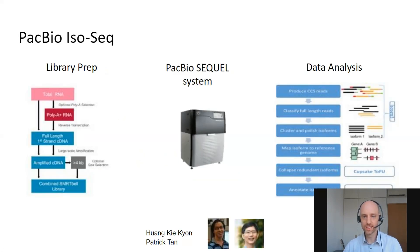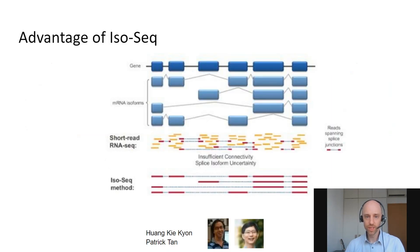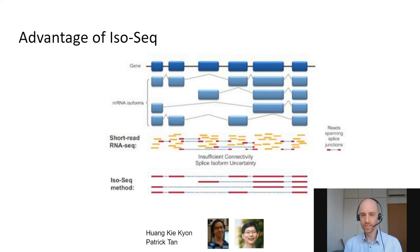We used the PacBio IsoSeq system, which involves data generation and a pipeline that generates high-quality isoforms. The system has the advantage that it's accurate, so the isoforms we get are of very high confidence. Compared to short-read data, the advantage is that we can get essentially full-length reads assigned to these isoforms, and we can also use that to identify new isoforms that are present in the RNA but not in the annotations.